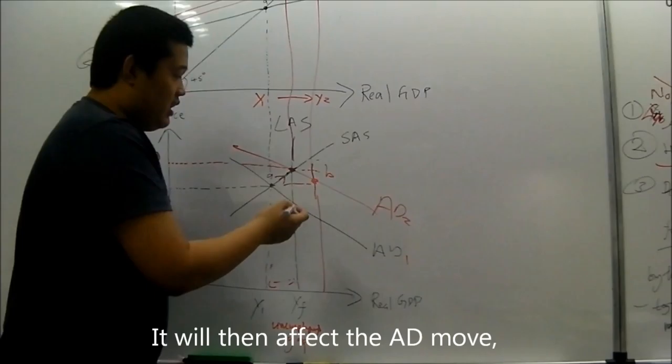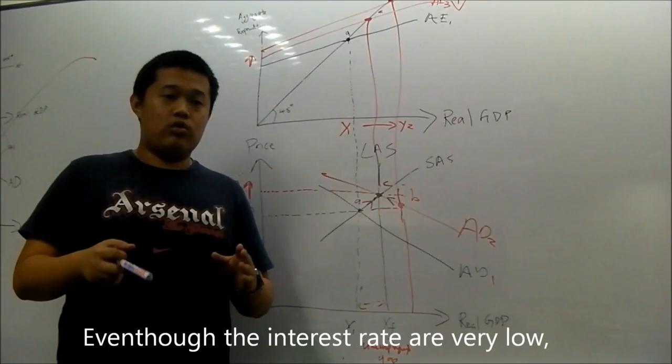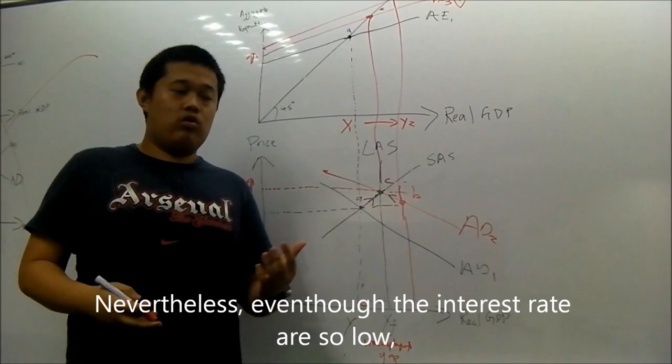And when purchasing power has decreased, it will then affect the AD to move back to point C, which is full employment. In this case we use fiscal policy to overcome the unemployment gap.